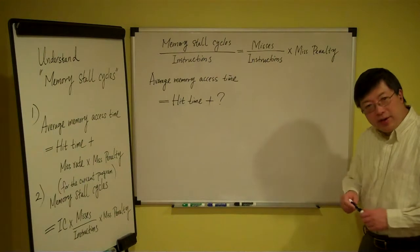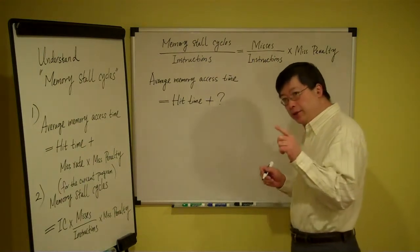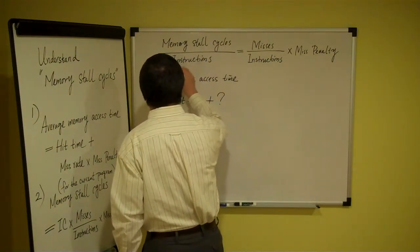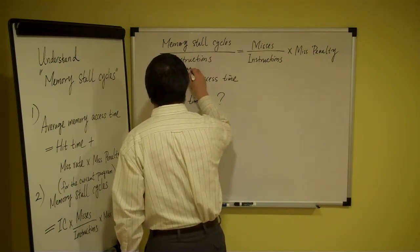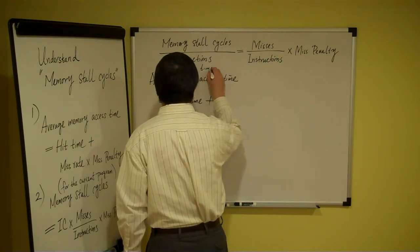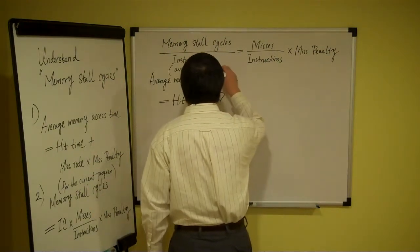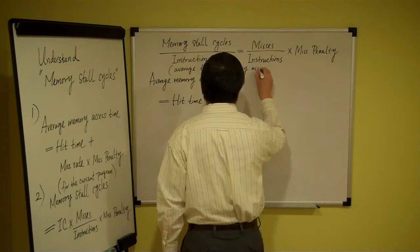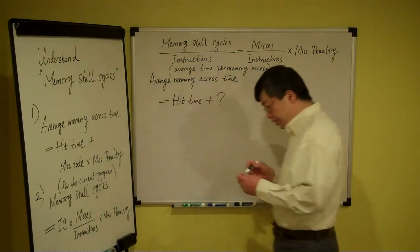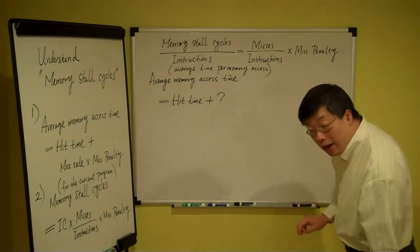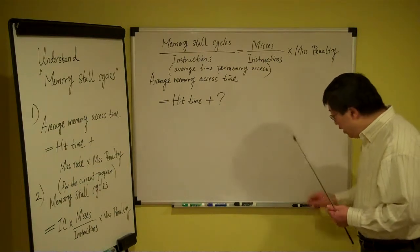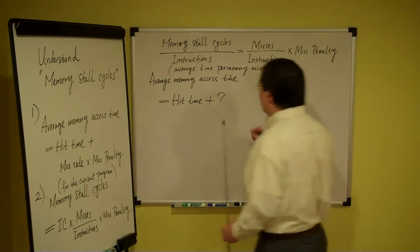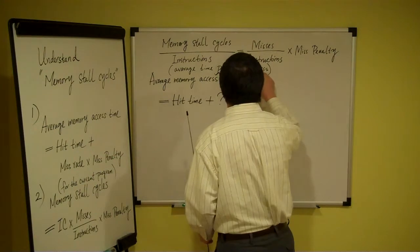Now we interpret this term as average time per memory access, rewriting it from a different point of view. So I write it as: average time per memory access. The key term revealed here is 'per memory access.' When you see 'per,' you need to do division — you have some total memory access time divided by the total number of memory accesses. That gives you per memory access.